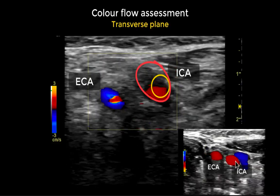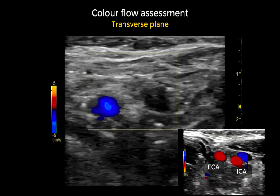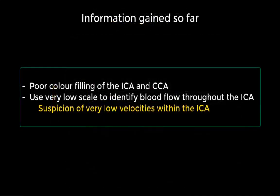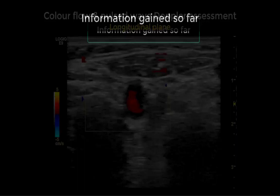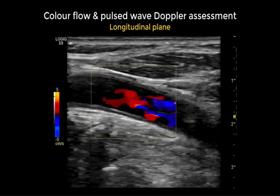At the bottom right corner you can see what a normal internal carotid artery should look like. The findings so far using colour show poor colour filling of both the internal and common carotid artery, which is probably indicative of very low velocity. We used a very low scale to identify these low blood flow velocities.